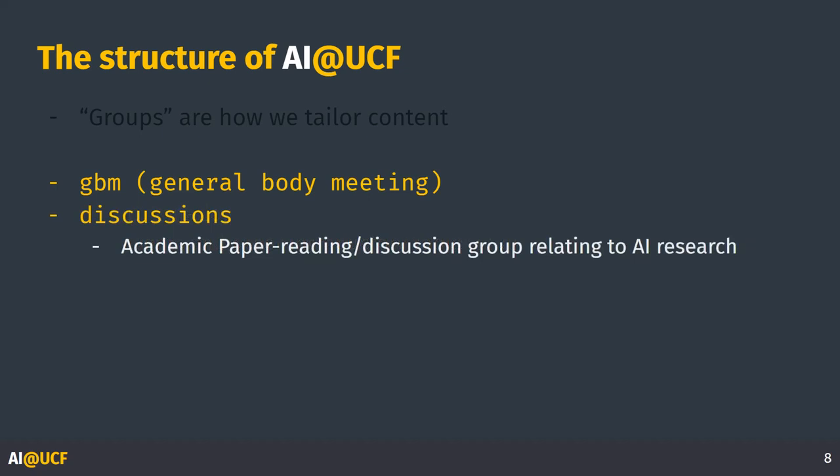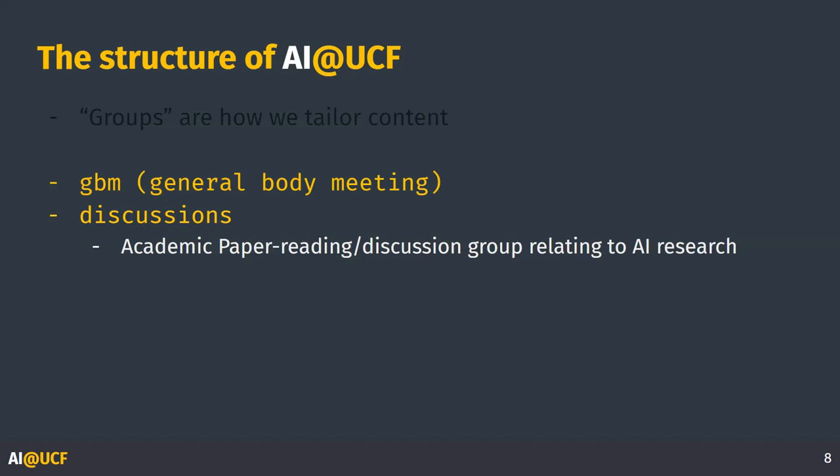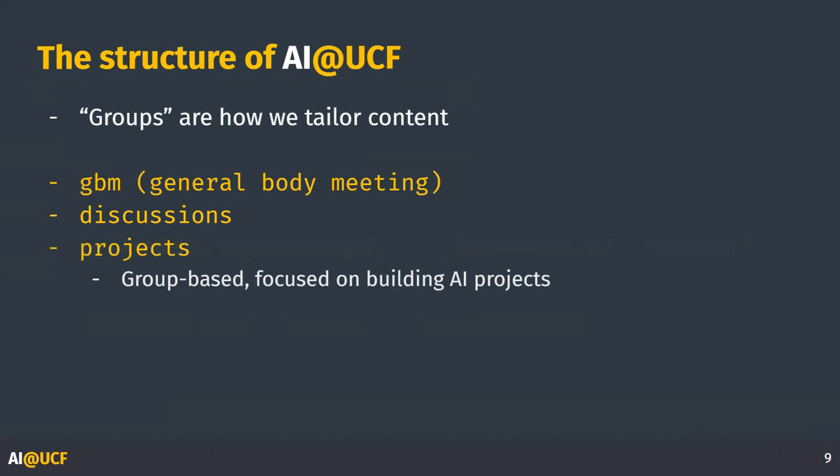I'm the discussions director. In the discussions group, we just meet and read research papers related to AI and discuss them — talk about the limitations and the strengths of the paper and ideas that have been sparked from reading said paper. Last but not least, we have projects. Right now we have six active projects, and we're going to go over all of them at the end. They're basically all student-led, just for fun, and they usually last about one or two semesters.